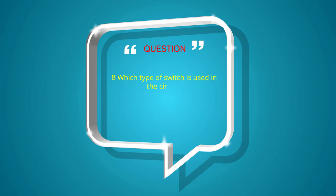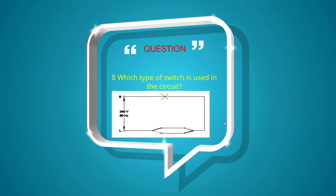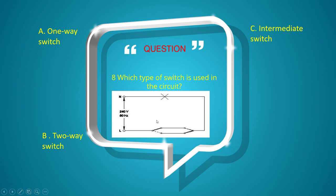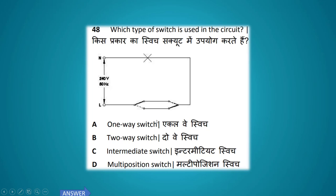Which type of switch is used in the circuit shown? Options: one way switch, two way switch, intermediate switch, multi position switch. The answer is two way switch.